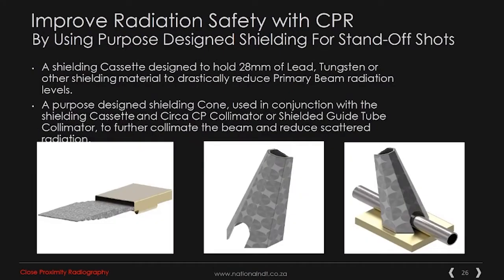The shielding cassettes, also used in standoff struts and tankage areas, are designed to hold 28 mm of lead, tungsten, or other shielding material to drastically reduce primary beam radiation levels. A purpose-designed shielding cone is used in conjunction with the shielding cassette and CIRCUS CPE collimator or shielded guide tube collimator to further reduce collimation of the beam and reduce scattered radiation. The focus here, and rightly so, is on safety first.